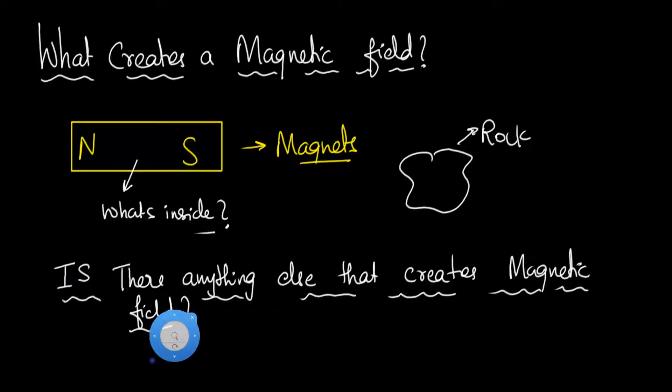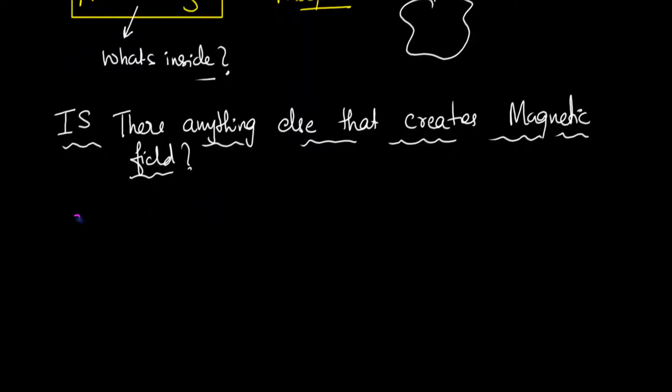And the answer to this question was given by Oersted, a Danish physicist who in about 1820 accidentally figured out that if you take a wire and pass current through that wire, a very strong current, he was doing some kind of a demonstration in his classroom or something.